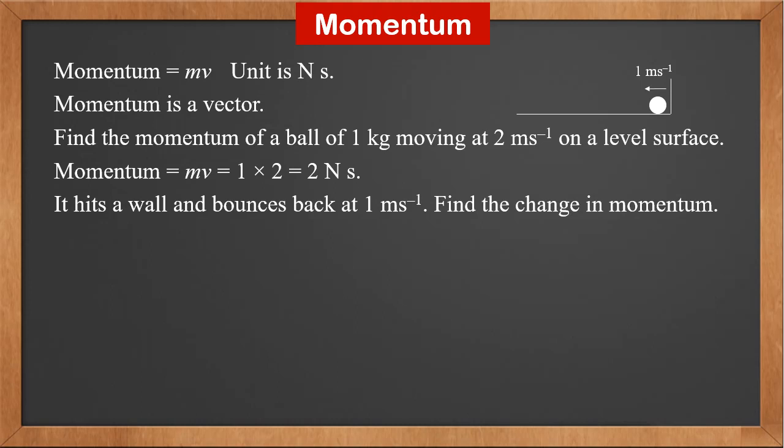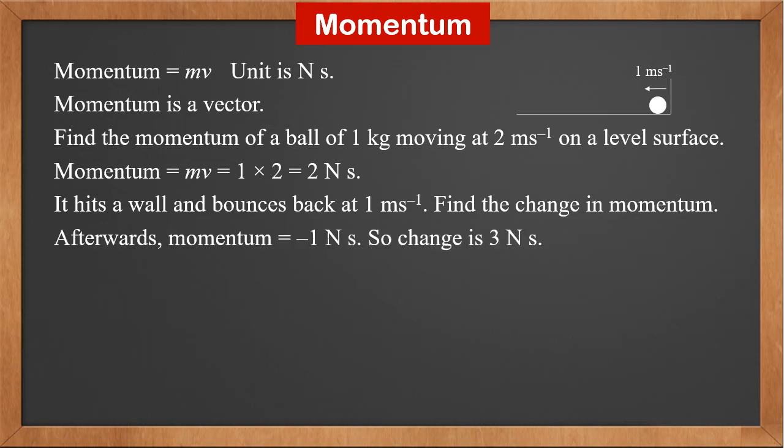Find the change in momentum. After the ball hits the wall, the velocity changes direction, so it becomes negative. Therefore, the momentum becomes minus 1 newton second. So the change in momentum is 3 newton seconds.